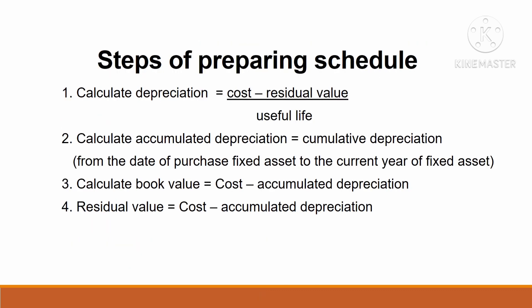Here are the steps for preparing the depreciation schedule. Step one: calculate depreciation = cost less residual value divided by useful life. Step two: calculate accumulated depreciation from the date of purchase to the current year. Step three: calculate book value = cost less accumulated depreciation. Step four: verify residual value = cost less accumulated depreciation at the end of useful life.